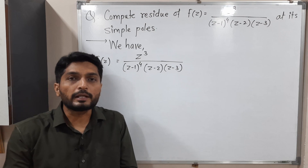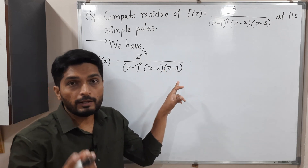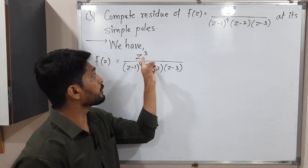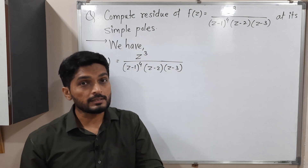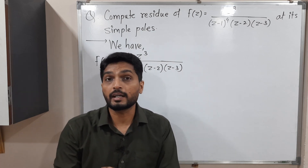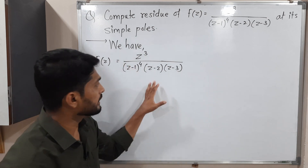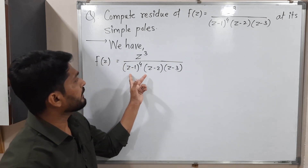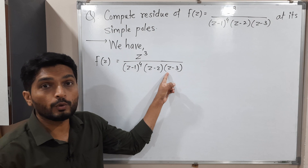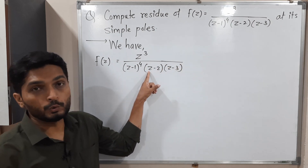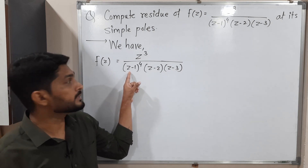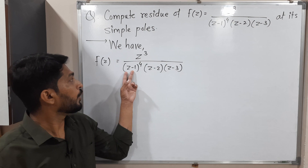We have to find out the value of z where the denominator will be 0. If I put z equal to 3, the denominator will be 0, but not the numerator. In some cases both numerator and denominator are 0 simultaneously — then we'd go for the definition. But here we can directly find the poles. z equal to 3 is a pole of order 1. z equal to 2 is a pole of order 1. z equal to 1 is a pole of order 4.